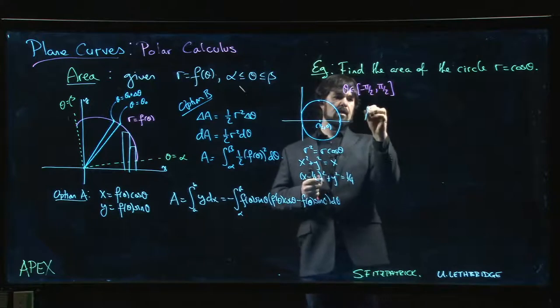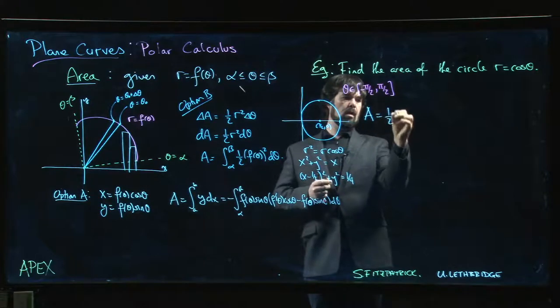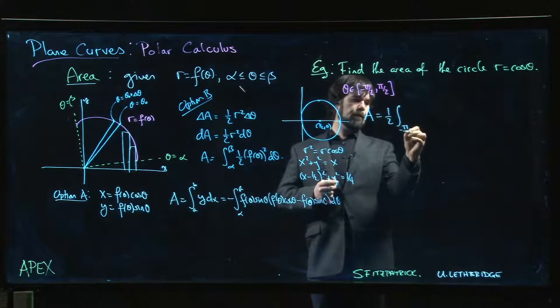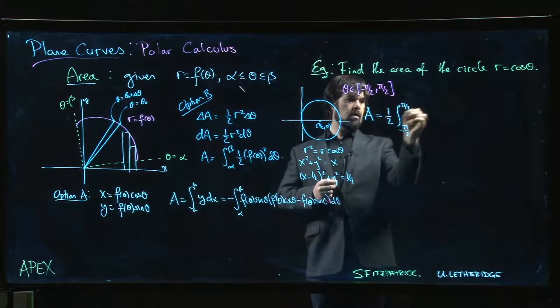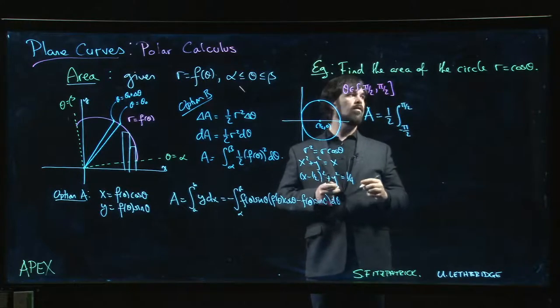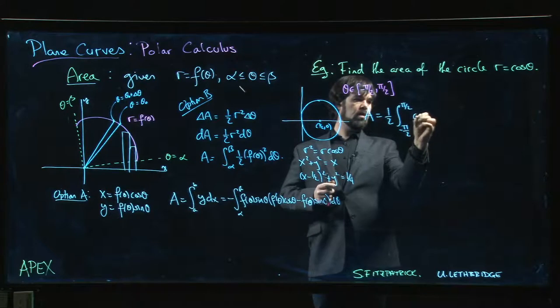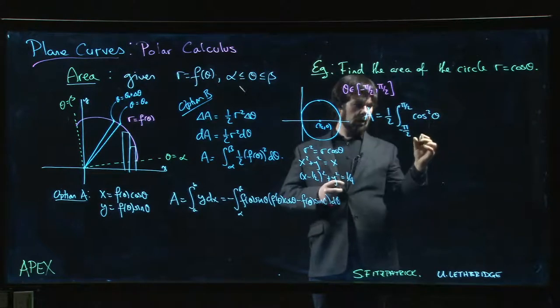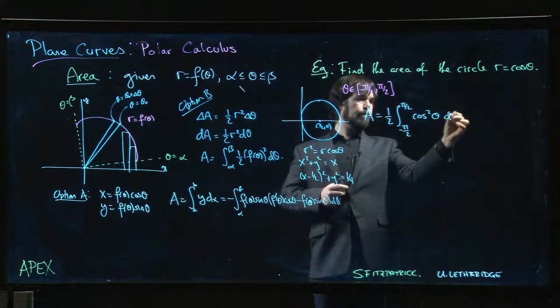So let's compute the area. We should get that the area is 1 half integral minus pi over 2 to pi over 2 of f of theta, which is cos theta, squared.